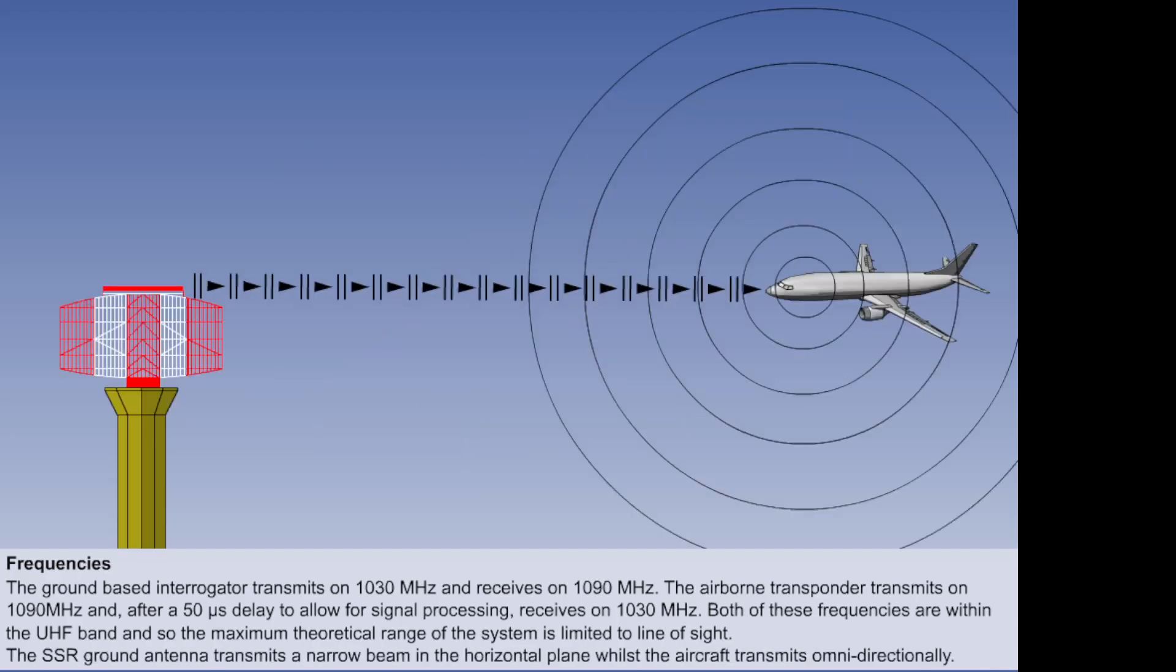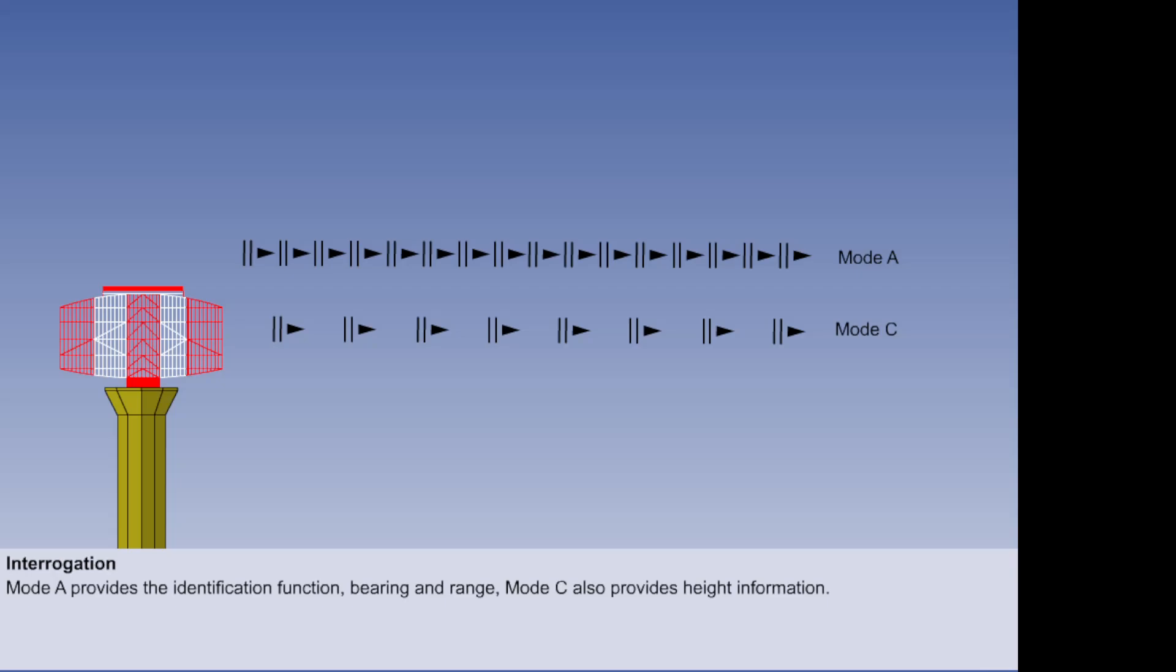The SSR ground antenna transmits a narrow beam in the horizontal plane, which scans through 360 degrees, whilst the aircraft transmits omnidirectionally. The ground interrogator transmits a predetermined series of interrogation pulses on the carrier frequency of 1,030 MHz. The two main interrogation modes are mode alpha and mode Charlie. Mode Sierra is a new system, which will eventually supersede modes alpha and Charlie, but we will look at it in the next lesson.